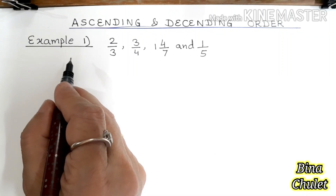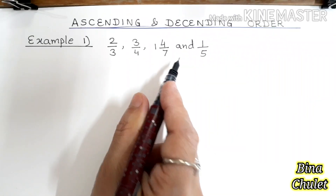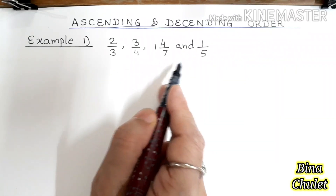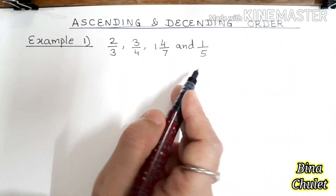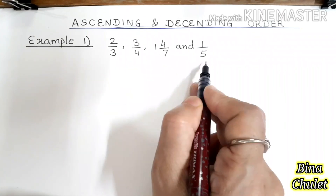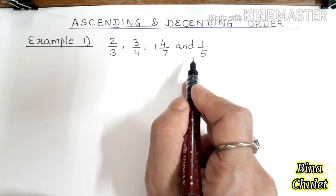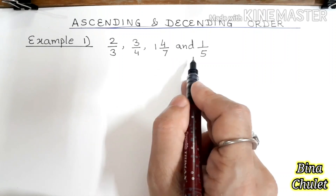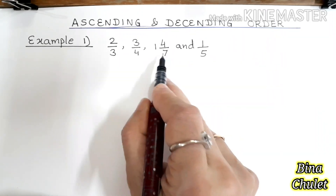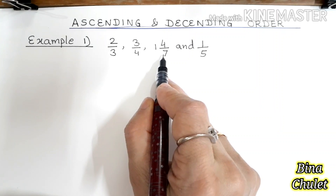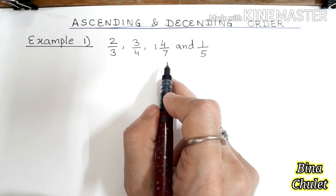For converting them into like fractions, first of all we need to find the LCM of the denominators. Before we do that, we have to check the fractions. If any fraction is in mixed number or mixed fraction form, then convert it into improper. Like here we can see this fraction is the mixed fraction, so we convert it into the improper fraction.